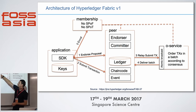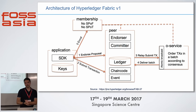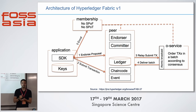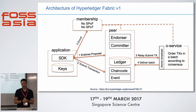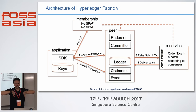The peer can now perform two different roles: it can be an endorser or a committer. The committer peer just commits the transaction; the endorser peer performs transaction validation. We decoupled these roles from the peer, so we can perform different roles — and that's how we can scale.